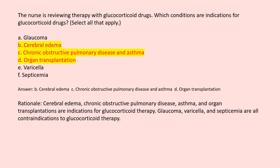Answer: B. Cerebral edema. C. Chronic obstructive pulmonary disease and asthma. D. Organ transplantation are indications for glucocorticoid therapy. Glaucoma, varicella, and septicemia are all contraindications to glucocorticoid therapy.